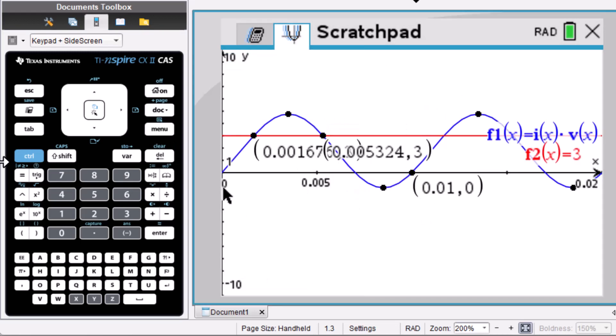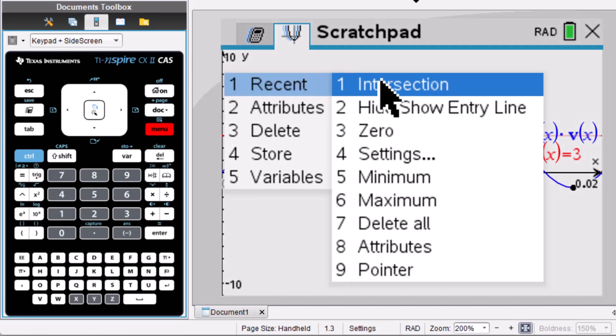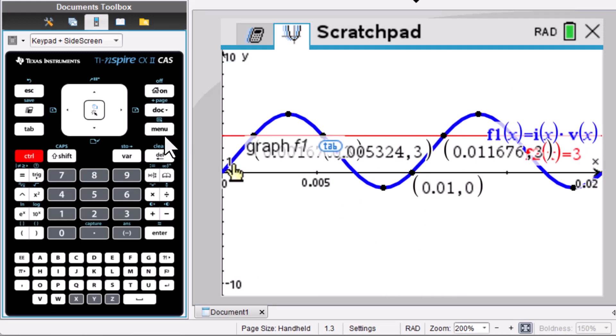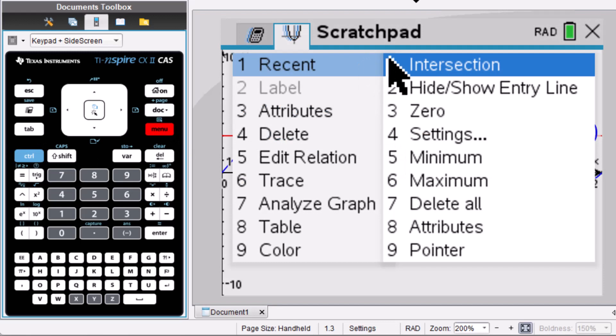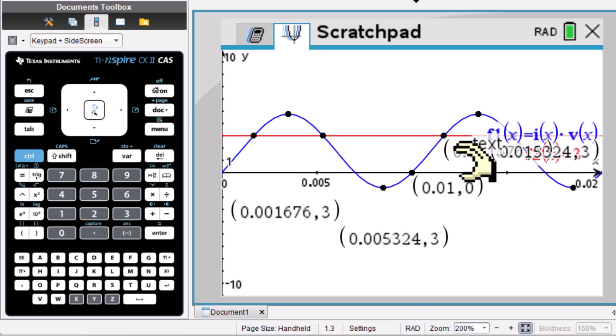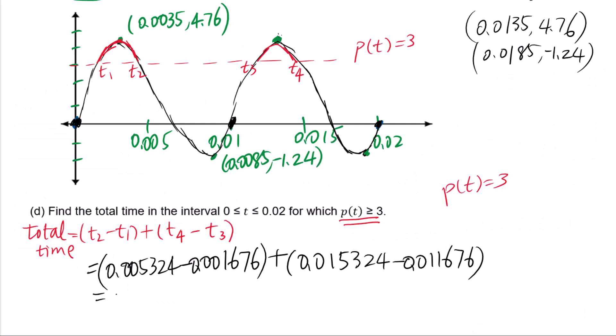Intersection again. Control menu, recent. Intersection. Control menu again, intersection. Then we can move this down. T1, T2, T3, T4 = 0.00730.